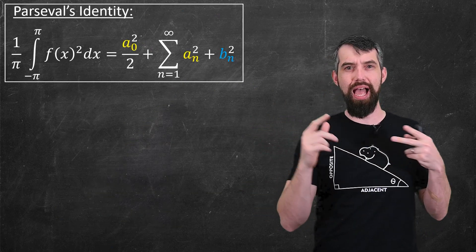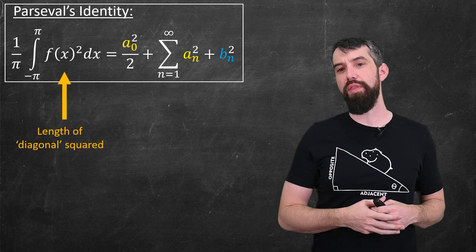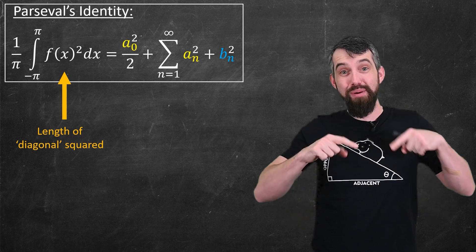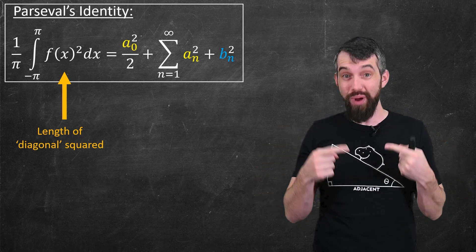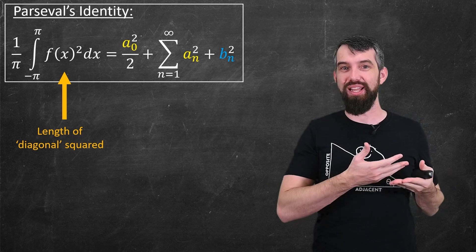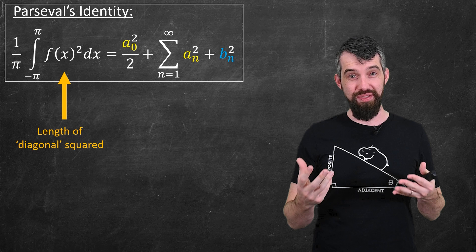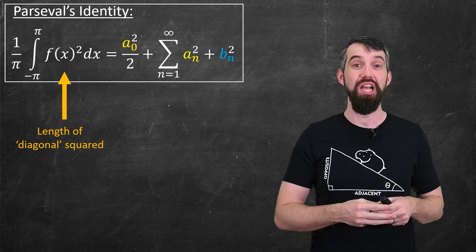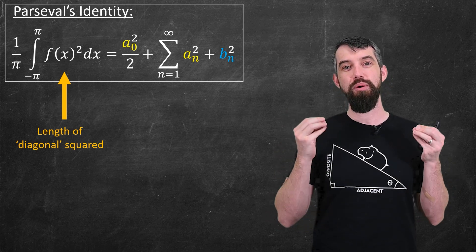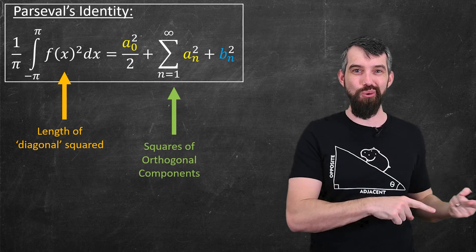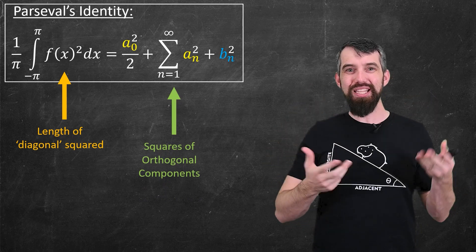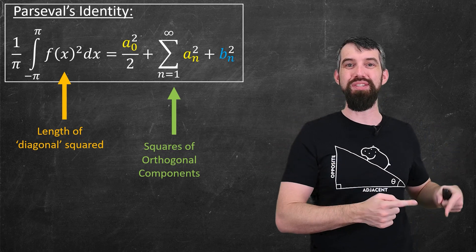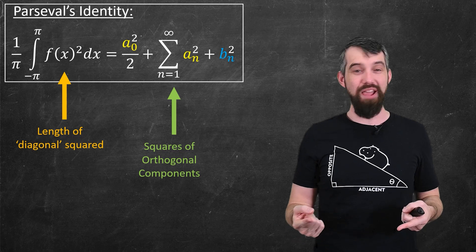So let's go back to Parseval's identity. What do I consider that thing on the left? Well, the integral of f(x)² is just like the inner product of f with itself. And what we just argued was that the inner product of f with itself is a little bit like saying the length squared of that diagonal. So intuitively, this whole expression on the left is a little bit like saying the length squared of my original function f(x), length interpreted in this particular context with this particular inner product. And on the right hand side, I have the squares of the different components.